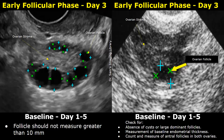You need to take at least two measurements of each follicle and then determine its mean diameter from those two measurements. During the baseline scan, a follicle should not measure greater than 10 millimeters.